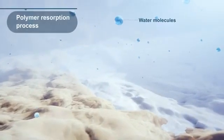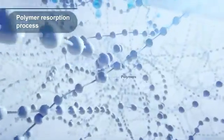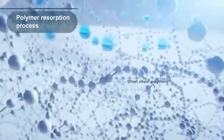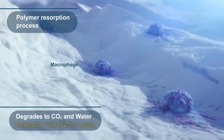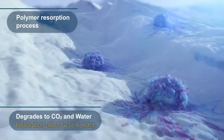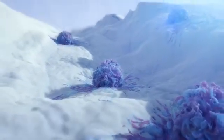The graft cage is resorbed in a two-step process. Initially, bulk degradation occurs by hydrolysis, reducing the molecular weight of the cage. Next, macrophages metabolize the short polymer chains in a process called phagocytosis, with CO2 and water as byproducts.